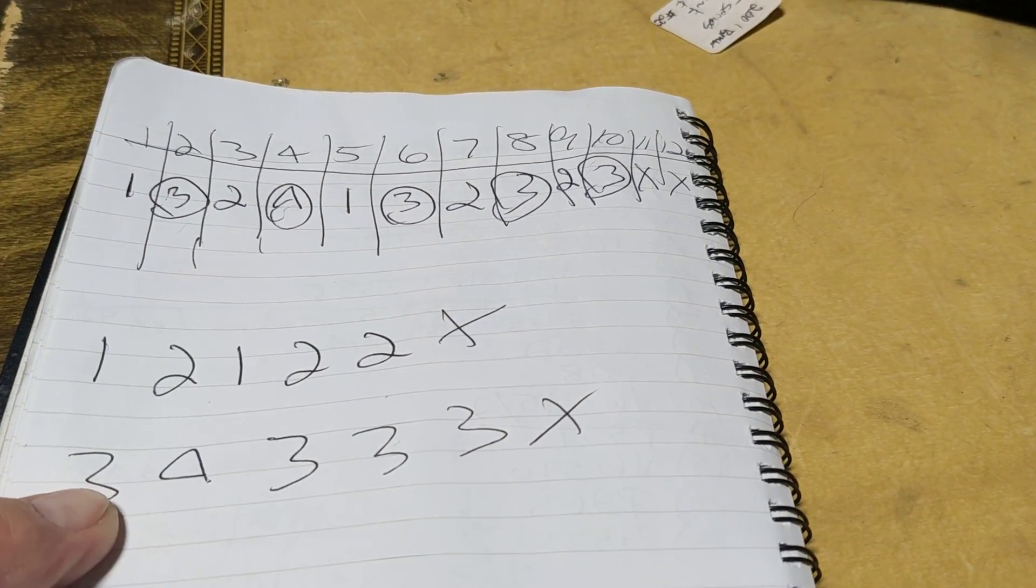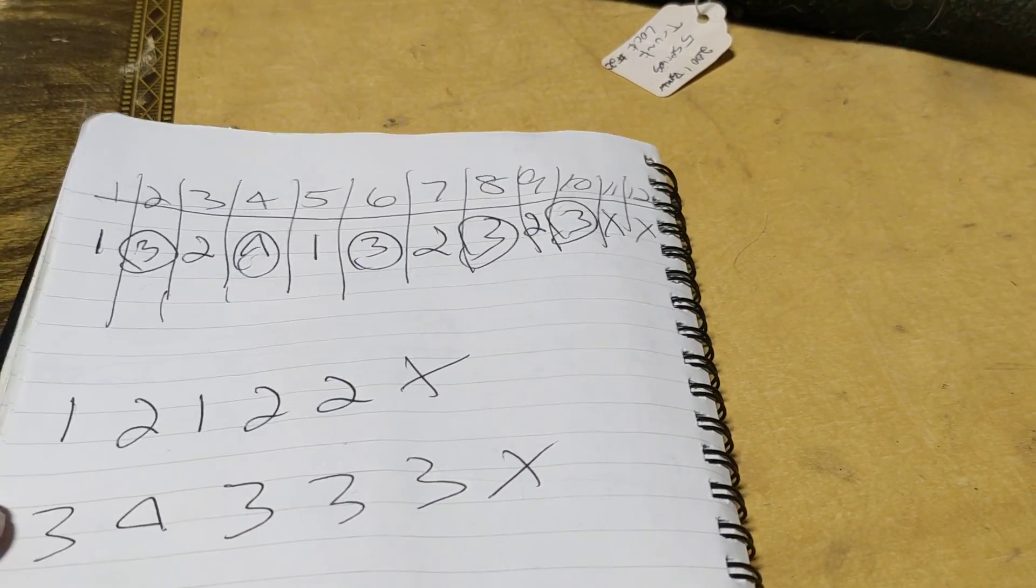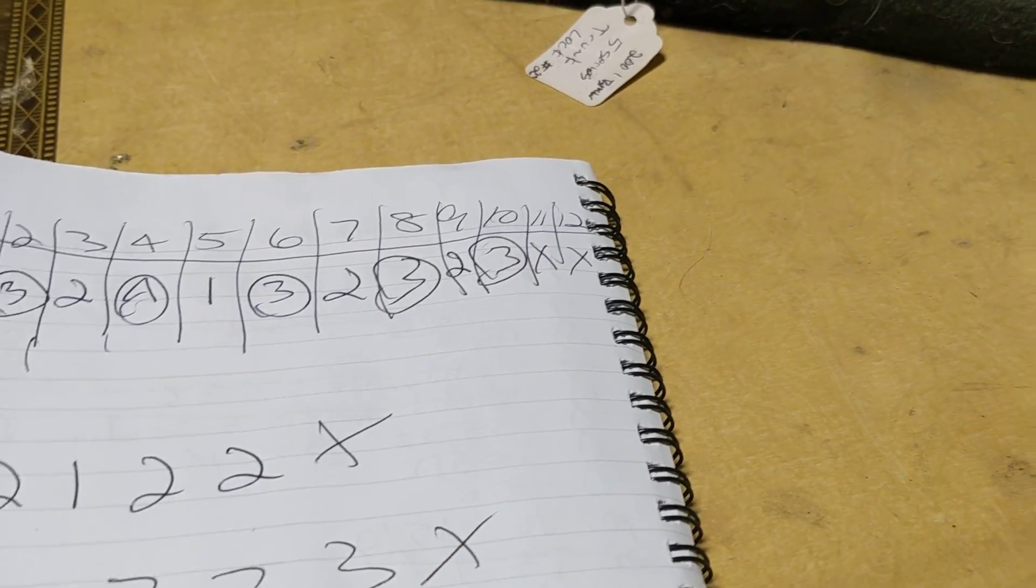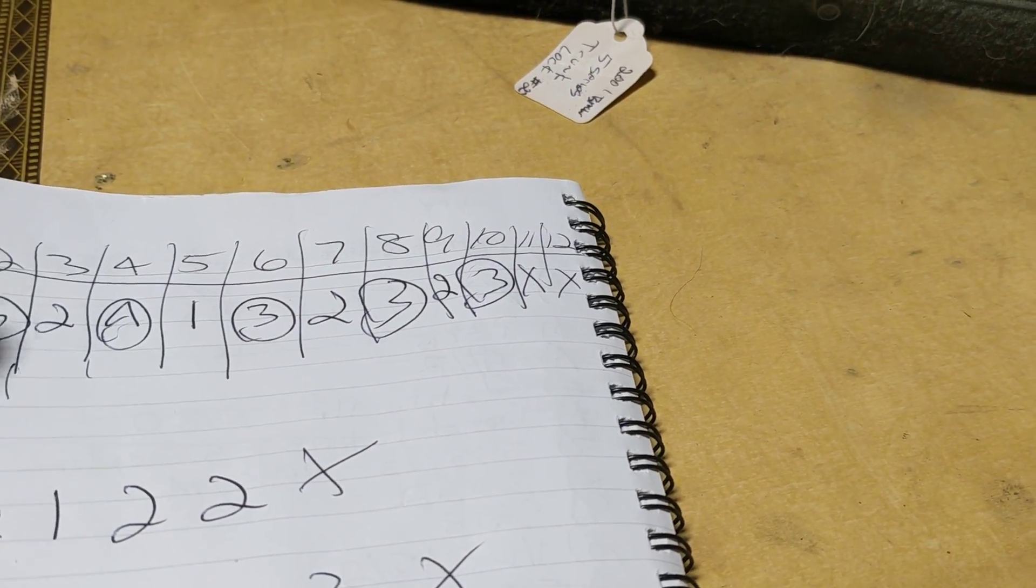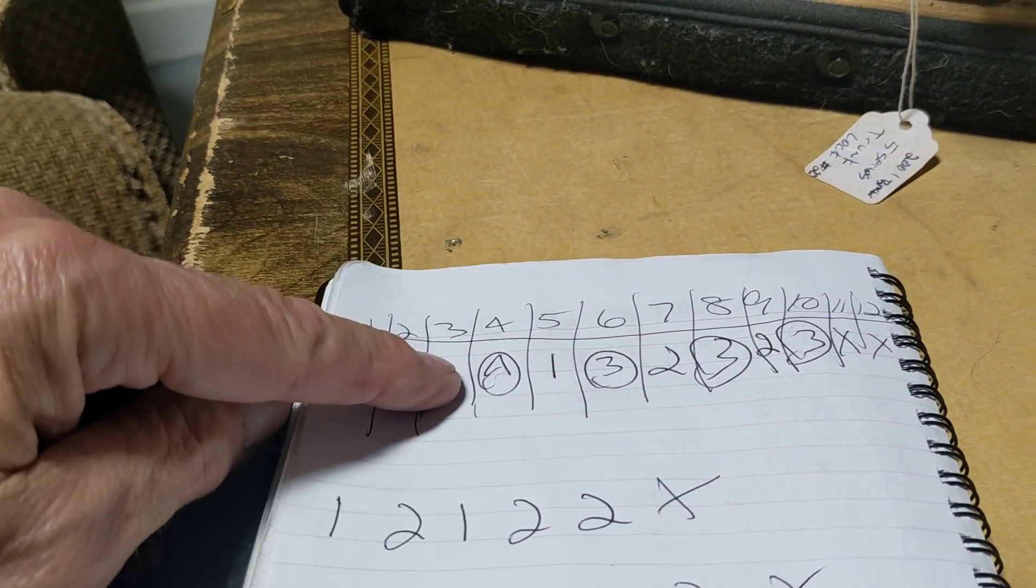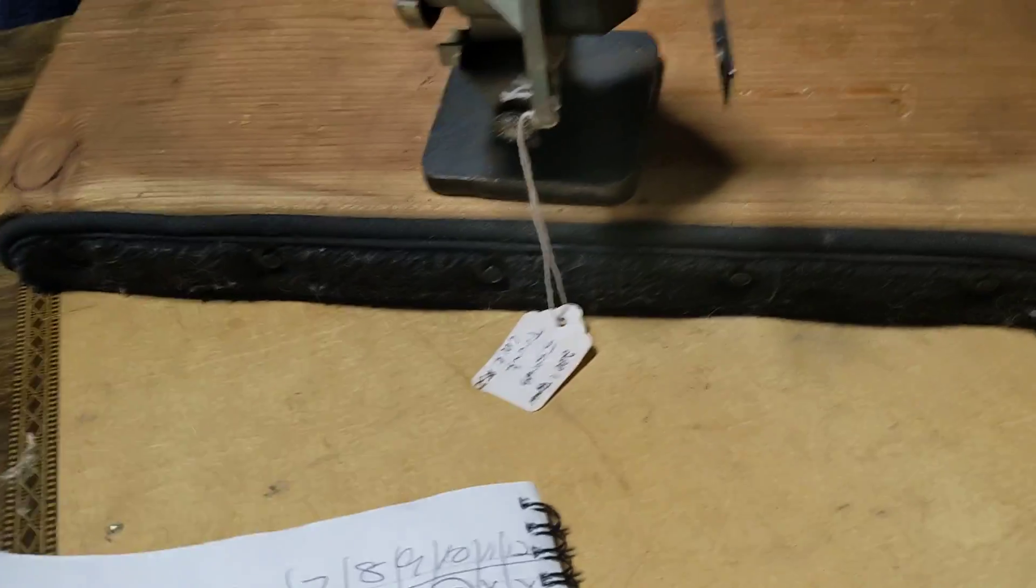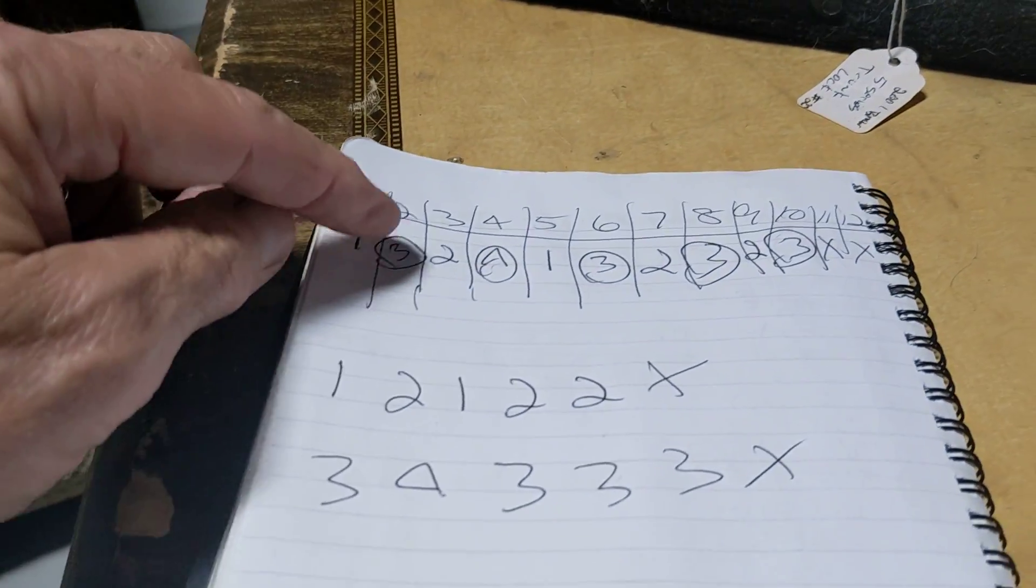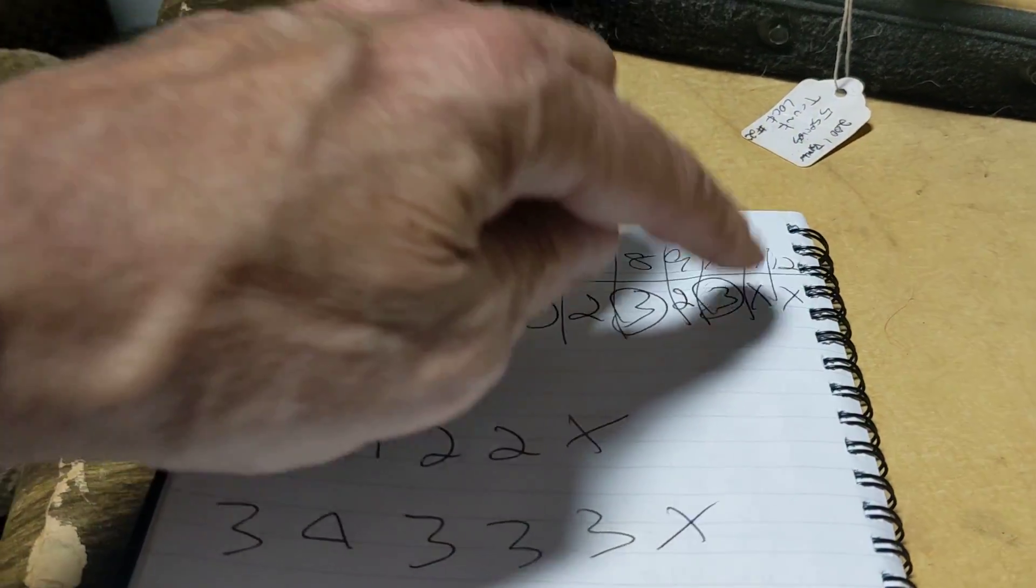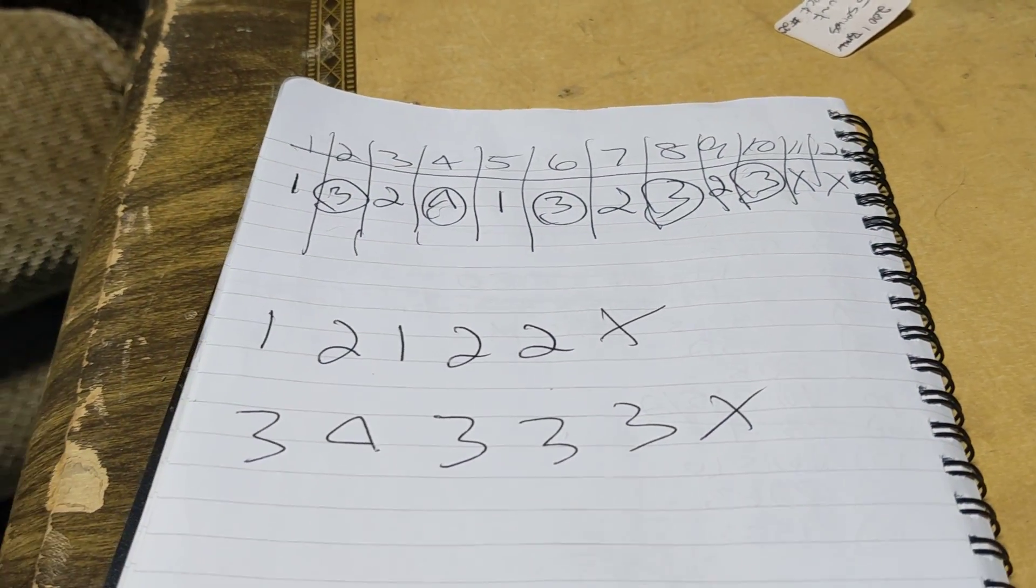Odd on the top, even on the bottom, A and B. So the odd row is going to be one, two, one, two, two. And then the B row is three, four, three, three, three. Do that every time.